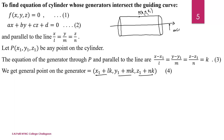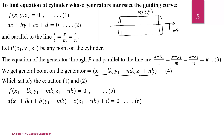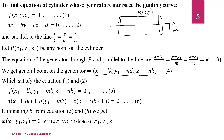Therefore, this point satisfies equations 1 and 2. We substitute in equations 1 and 2. From equation 6 (generally equation 2), when we simplify, we get the value of K. We put K in equation 5. In this way, we eliminate K and get an equation in terms of X1, Y1, Z1 equal to 0. The locus of point P means we write X, Y, Z instead of X1, Y1, Z1 to get the required equation of the cylinder.